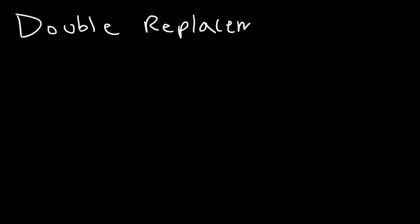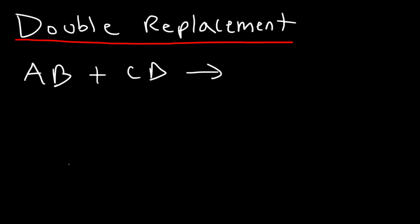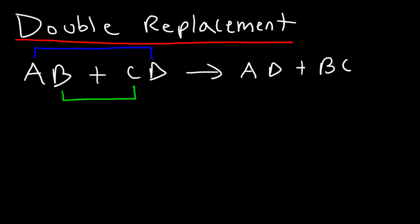Now let's move on to a double replacement reaction, also known as a double displacement reaction. It differs from a single replacement reaction by one key fact: in a single replacement, an element reacts with a compound (A + BC). In a double replacement, compound AB reacts with another compound CD. A pairs up with D and B pairs up with C, giving AD plus BC.